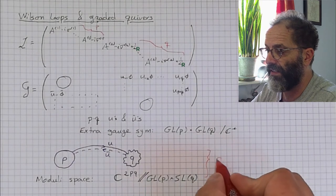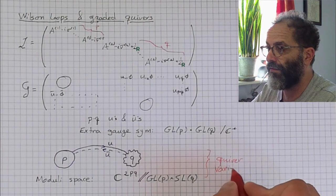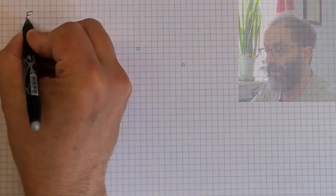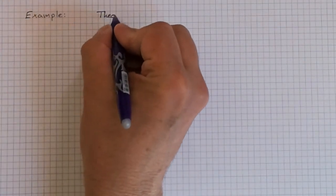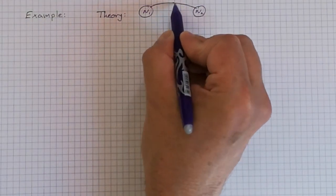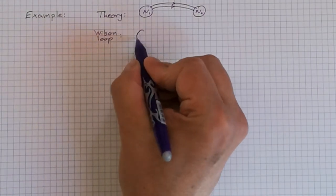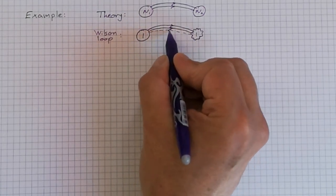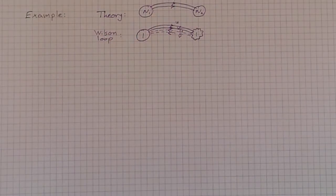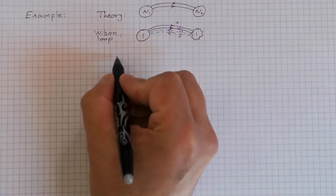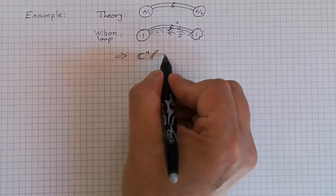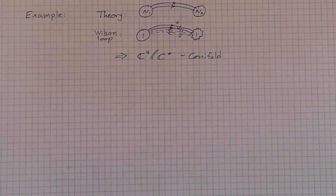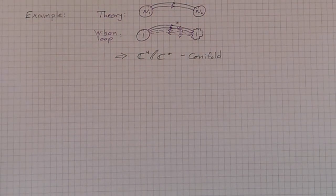Such quotients are known to mathematicians as quiver varieties, and they were also studied in the context of supersymmetric field theories by Hanani and Witten, where they looked at moduli space of three-dimensional theories. Let me look at more examples. So if I take again the product of two gauge groups but with a pair of chiral bifundamentals, then the simplest fermionic Wilson loop will include one and one in the two nodes, and there will be one parameter for every chiral field, so I will call them u and v, and for the anti-chiral fields it's u bar and v bar. In total we have four parameters, and the extra gauge symmetry is just C star, so we have C to the fourth modded by C star. This is known as the conifold, which arises in many contexts in string theory.